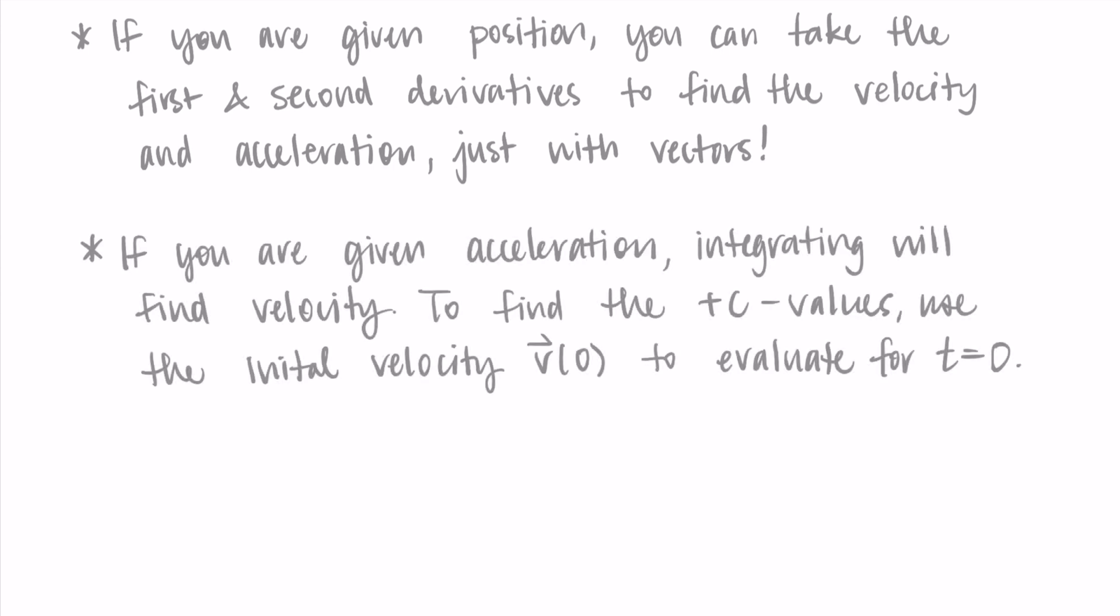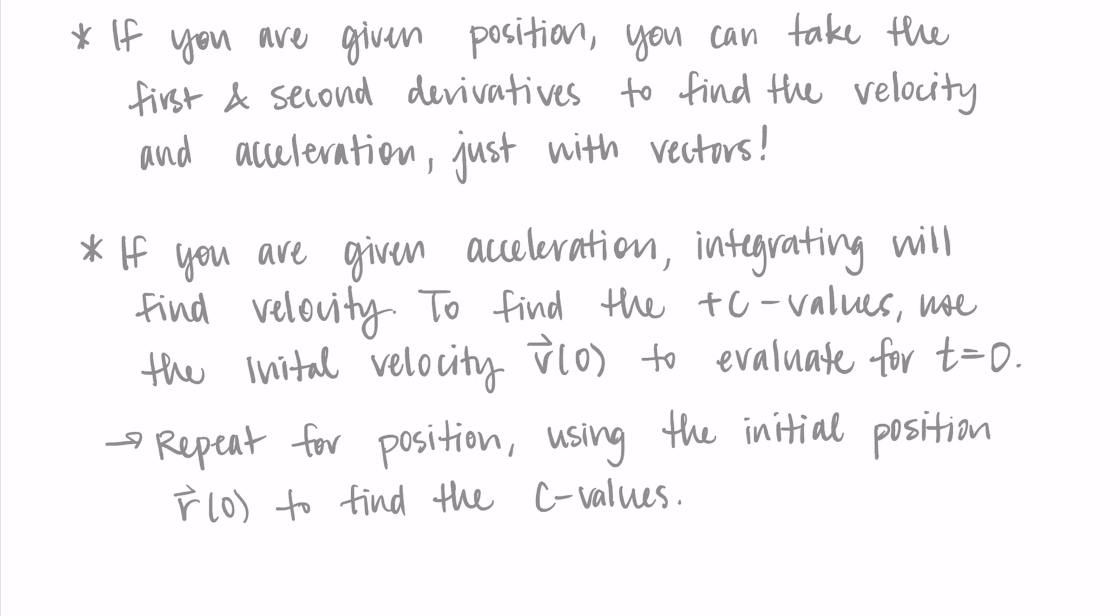Or if you are given acceleration, integrating will find you the velocity vector. One thing that's going to happen here when you do this is that you're going to integrate and you're going to find a general antiderivative, which has a plus c on it. So you're going to need to find those plus c values. And to do so, we use the initial velocity, which is the v at zero, to evaluate for t equals zero. So in this setting, you're going to be given an initial velocity, and you can substitute in t equals zero to find some information to help you out. I'll show you this in my example video that comes after this one. We would do the same thing for position, you would use the initial position r(0) to find the c values, and then you would have your vector for the position.